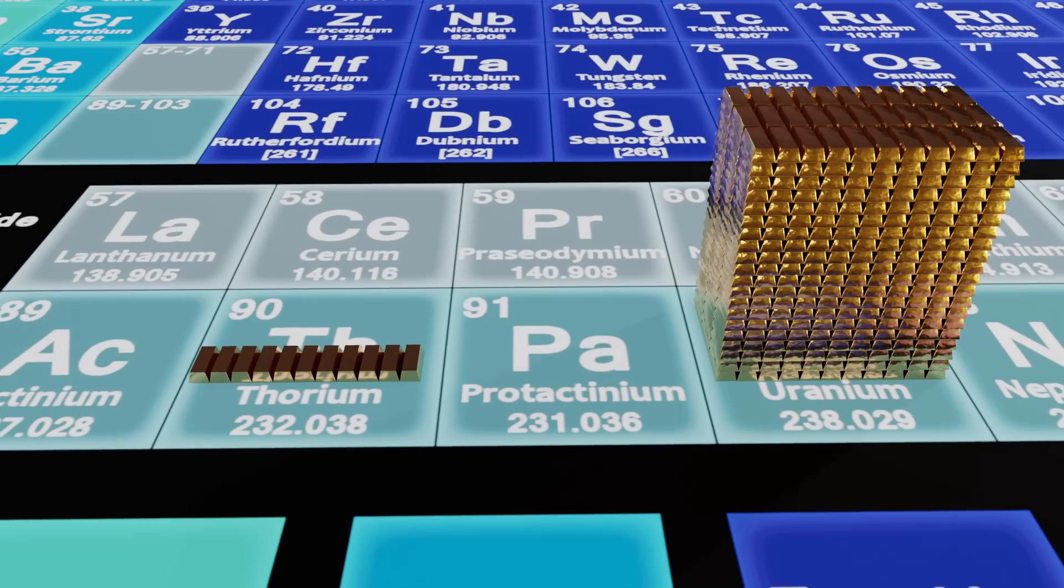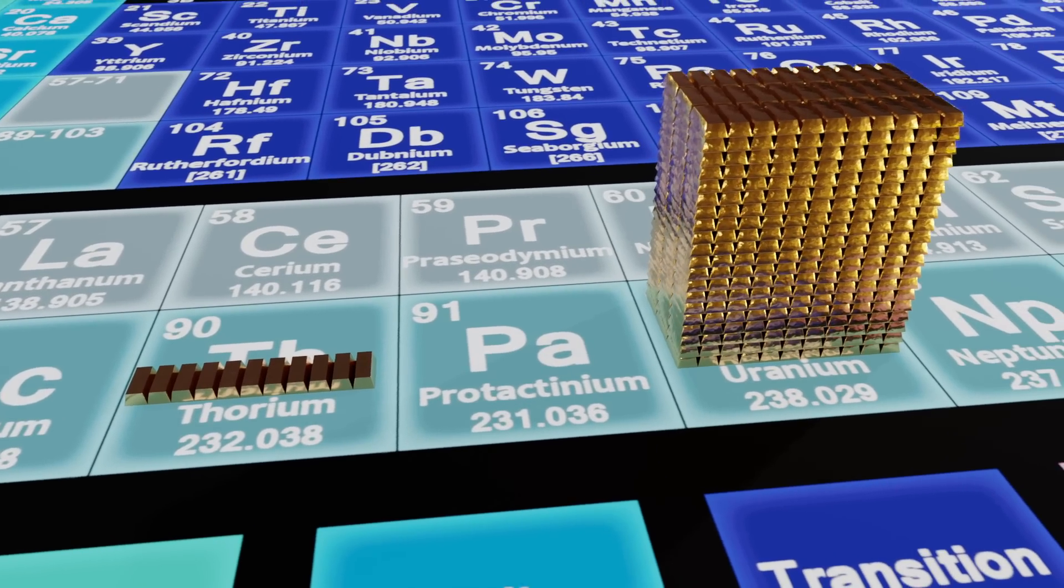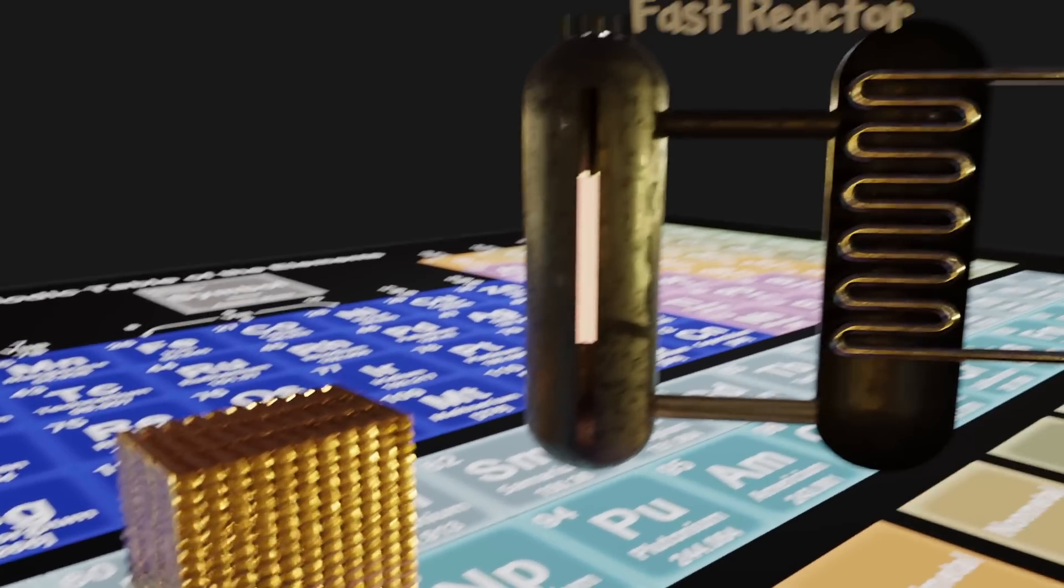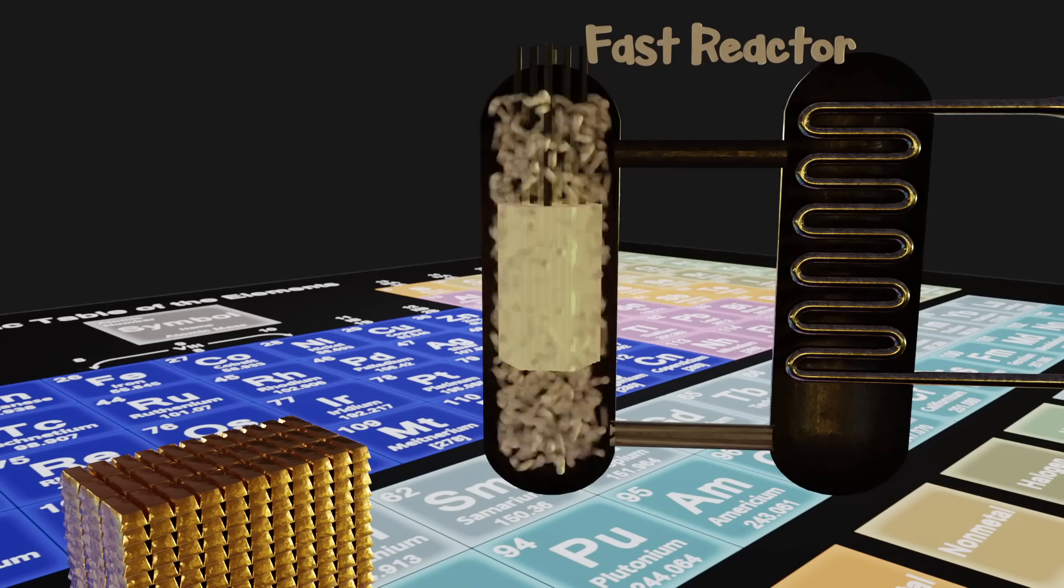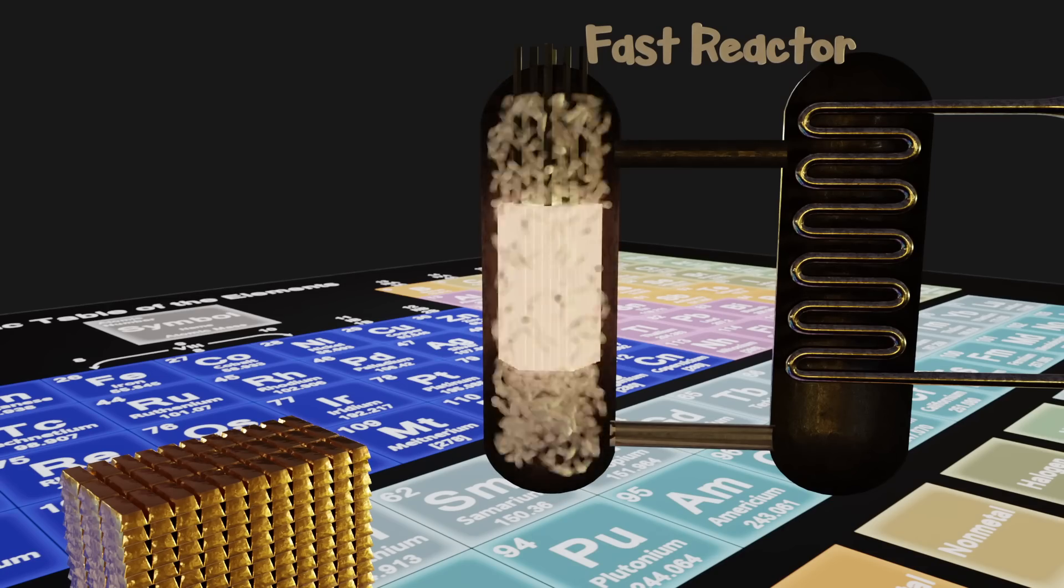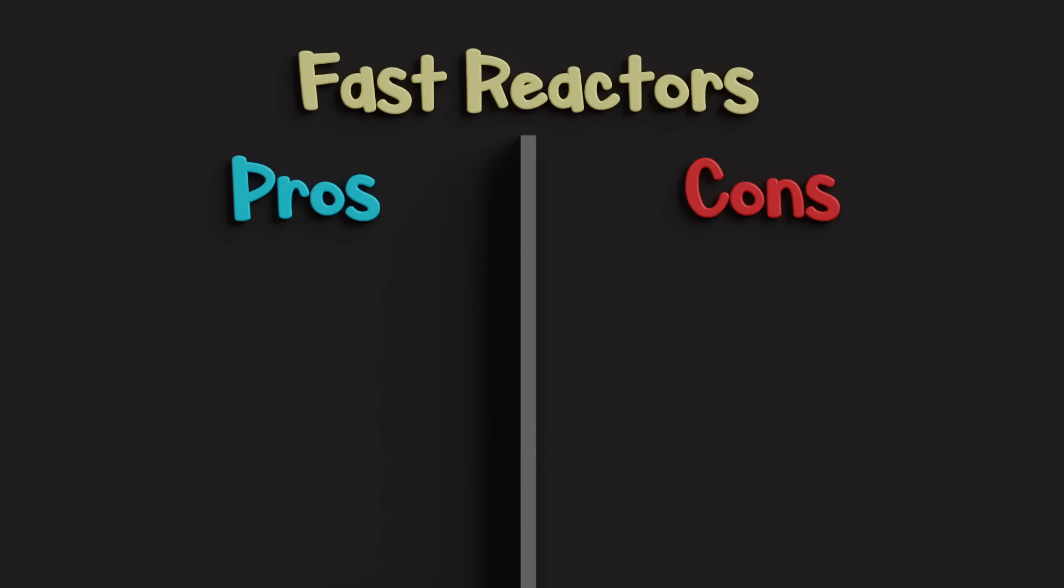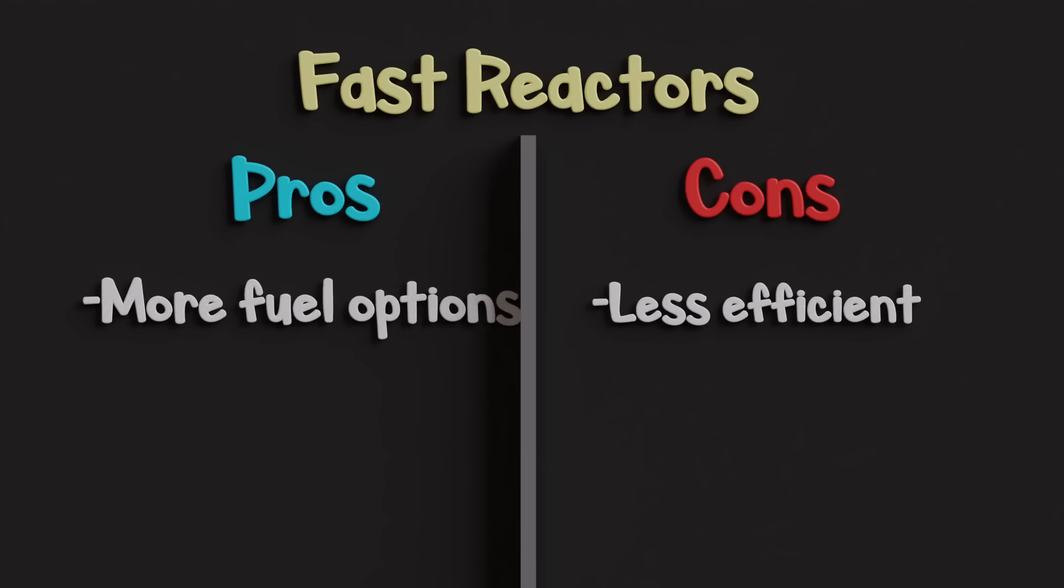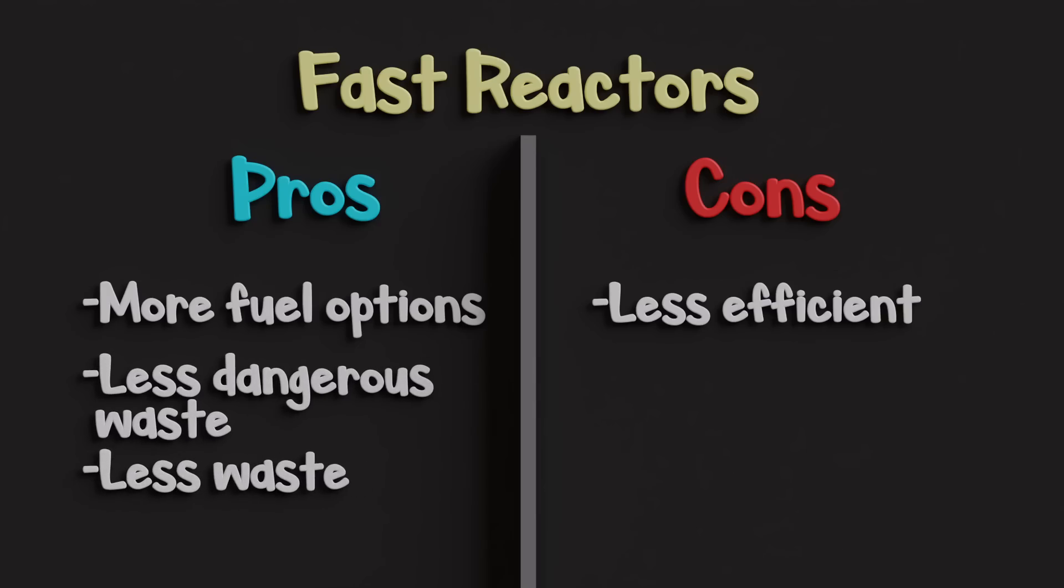Since we are already so deep into uranium as a fuel source, the other option for next generation reactors are so-called fast reactors, which use high energy neutrons. Despite being less efficient, fast reactors can use more isotopes as fuel while producing less harmful waste in much smaller quantities. They also have a couple engineering hurdles to overcome to make widespread adoption feasible.